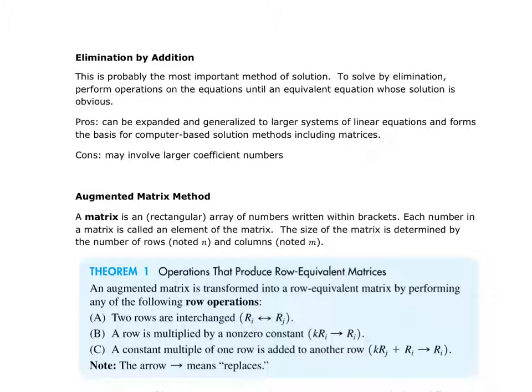We're going to use the notation of ri and rj, where i and j refer to rows. So for example, row one and row two can switch, or three times row one goes back into row one. Or we have three times row one plus row two, and it's going to go back into row two. That arrow means that's where the result is going — it will be replaced. So k·rj plus ri goes back into ri.